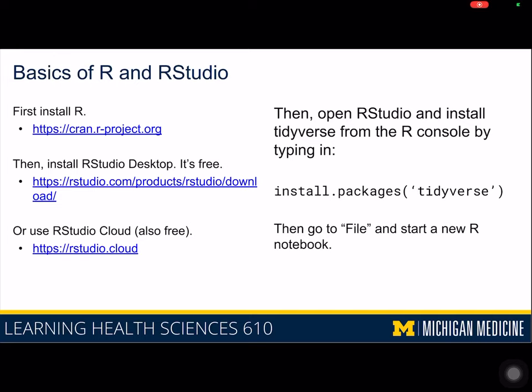Before you can install RStudio, the first thing you'll need to do is go to the CRAN R project link and install R as a language itself. R is available for Windows, Mac, and Linux, and you'll see separate links with instructions. Don't mind the fact that this website looks like it was designed in the 1990s — it probably was — but despite that, the content itself is actually up to date.